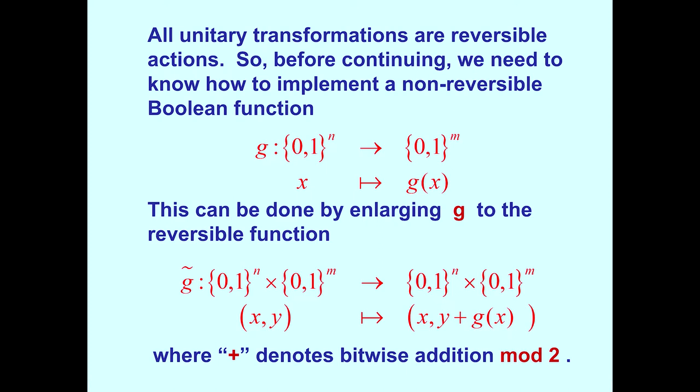All transformations are unitary transformations. So by continuing, we need to know how to implement a non-reversible function. There are the functions, the function implemented in Simon's algorithm is non-reversible. We like to implement it as a unitary transformation, and unitary transformations are reversible. This can be done by enlarging G to the following reversible function, as so shown. We've increased the domain to include both the argument and function values. And our new extended function is now reversible. In fact, if you apply it twice, you're back where you started. Here, plus denotes addition mod 2.